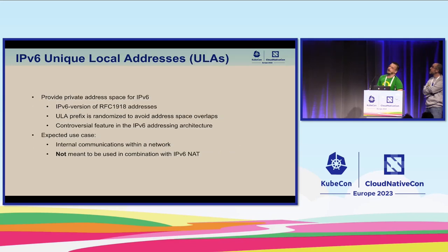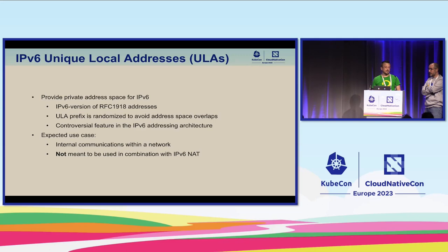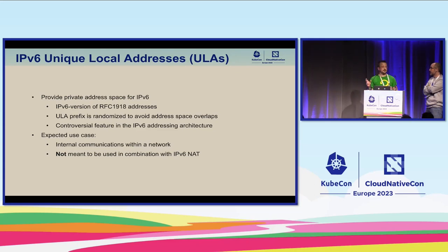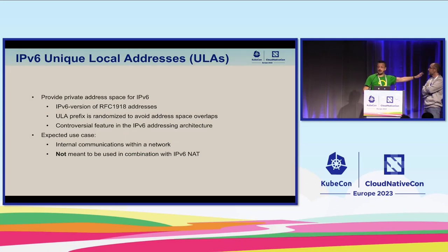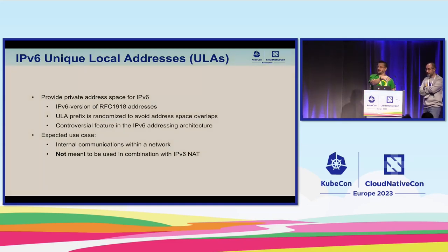Unique Local Addresses (ULAs) provide private address space in IPv6 — the equivalent of RFC 1918 addresses in IPv4. One important difference is that when configuring a ULA prefix, part of the prefix should be randomized. The goal is that if two companies each using ULA space were to merge, they can avoid address overlaps — unlike IPv4 where two companies often use overlapping 10.0.x.x space, and when one acquires the other, you have a problem.